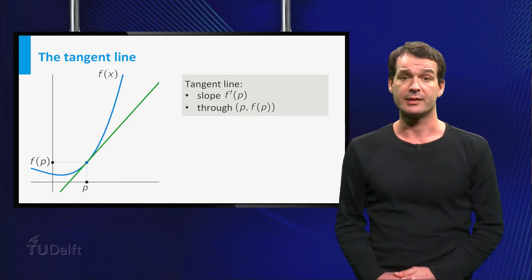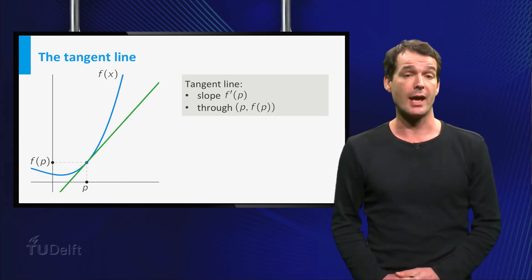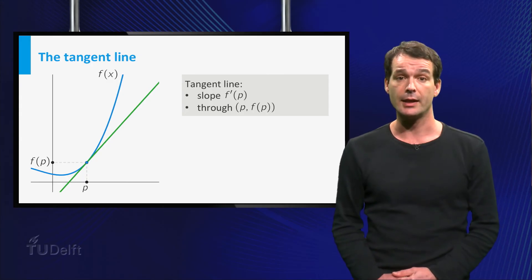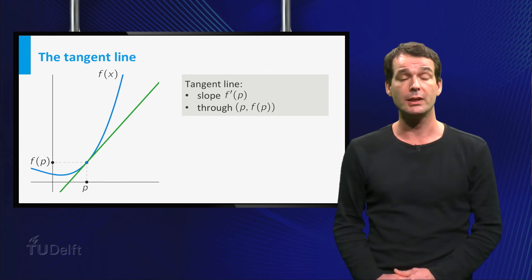Ok, the way we found the tangent line in this example can be used for any differentiable function. Suppose we want to know the tangent line at the graph of a function f at the point.